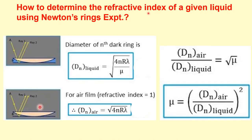How can we determine the refractive index of a liquid using Newton's ring experiment? First we measure the diameter of the rings in air, then we introduce the liquid and measure the diameter under the liquid. These two measurements allow us to calculate mu — the refractive index of the liquid.